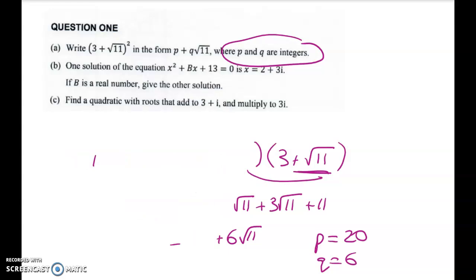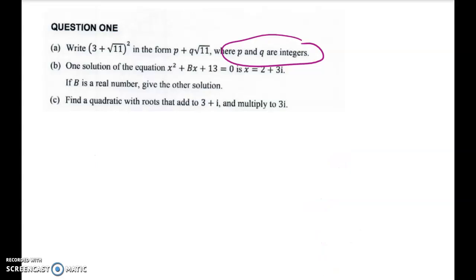Now the next question is one where when I gave this question in a test I had about half the class did a whole pile of extra work, and it's a very easy question. We are told that we've got a quadratic x² + bx + 13 = 0. We know that b is a real number. Because b is a real number, the conjugate root theorem is going to hold.